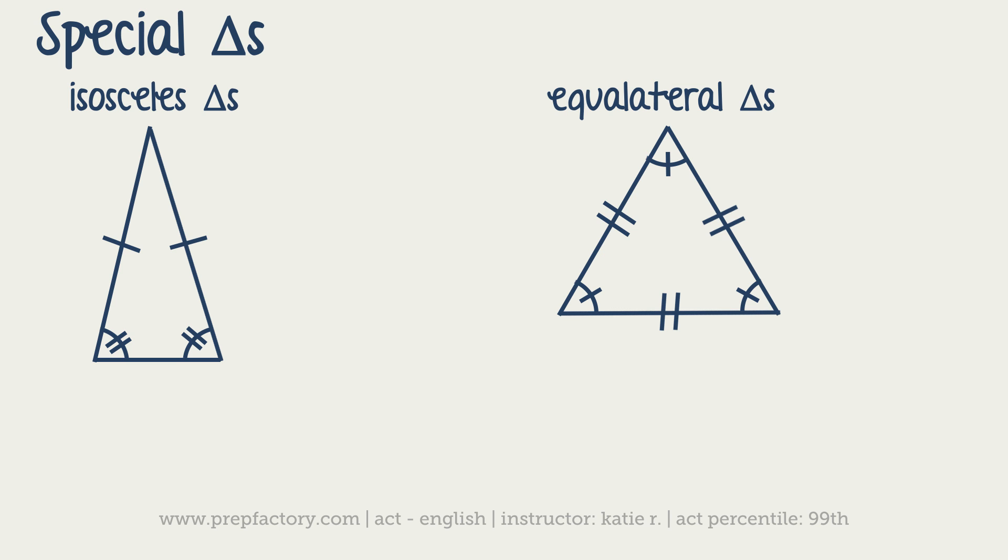So, the nice thing about a triangle being isosceles or equilateral is that you can use less information to find out everything about the triangle or, in other words, to solve for the triangle.